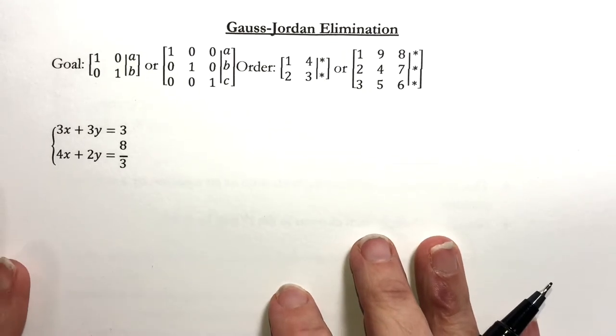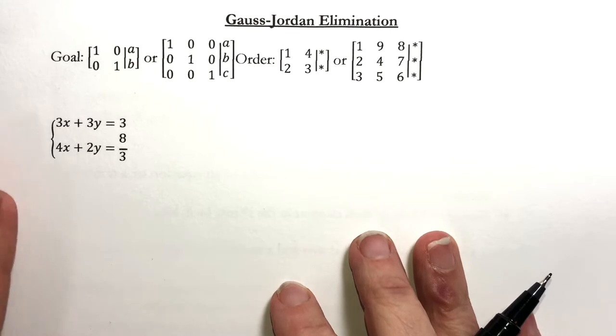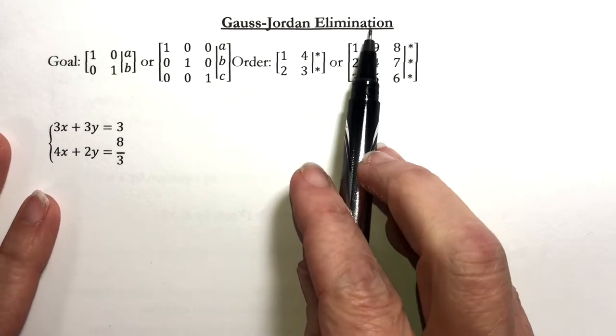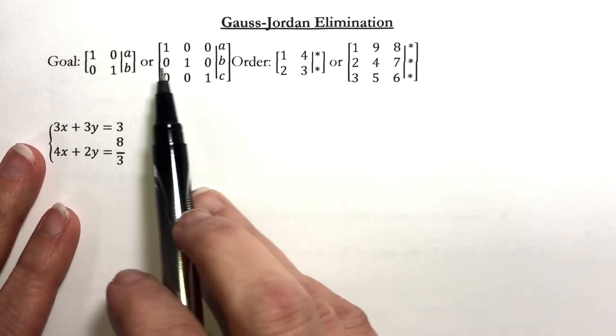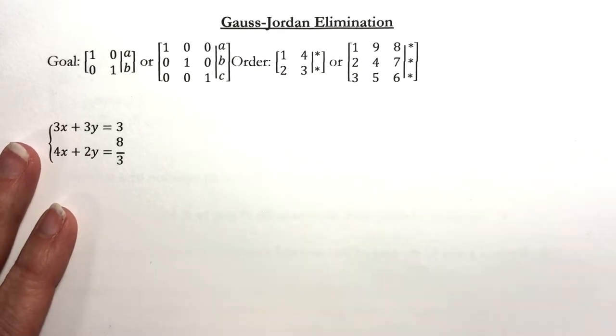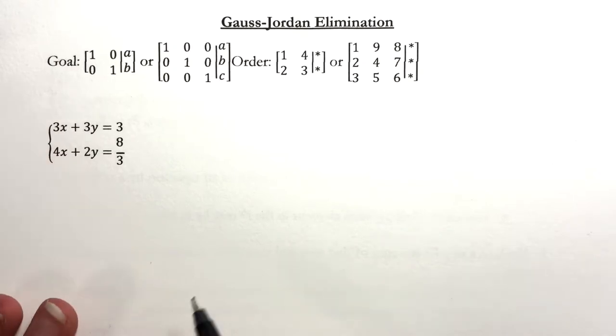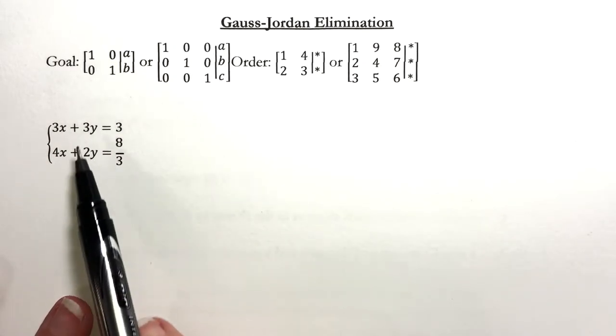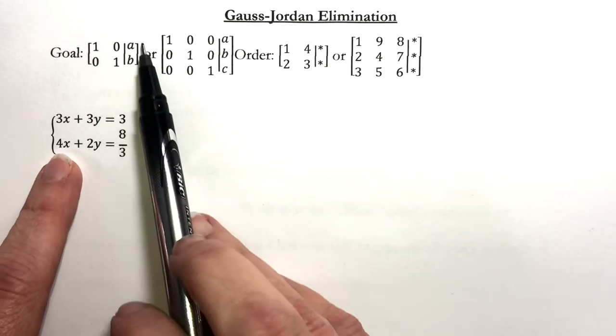This is part three of section 6.1. We're talking about Gauss-Jordan elimination. We're still going to start off by writing our augmented matrix and we're going to use our three row operations in order to change this into this.